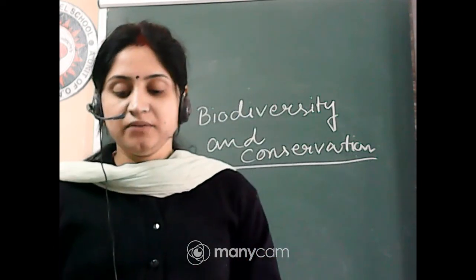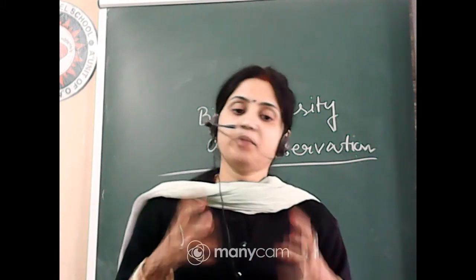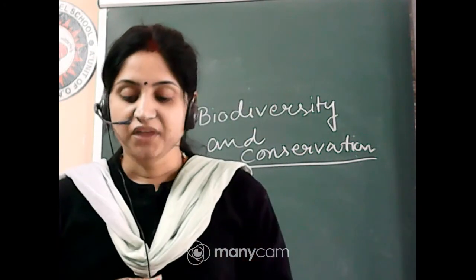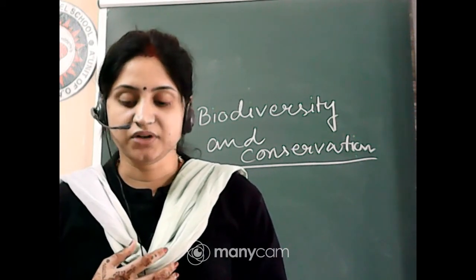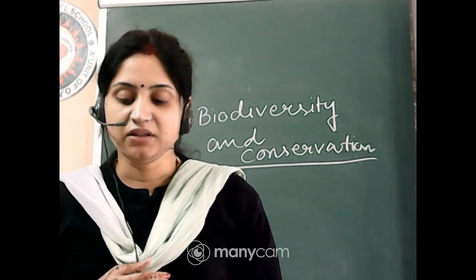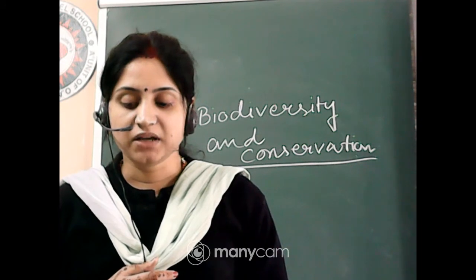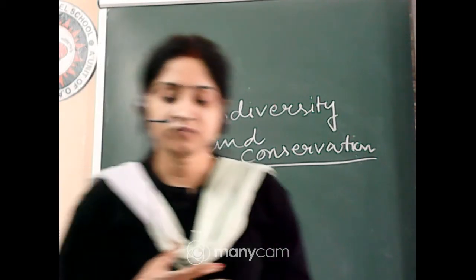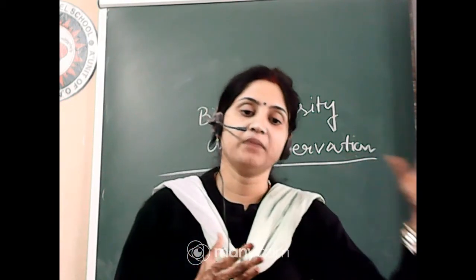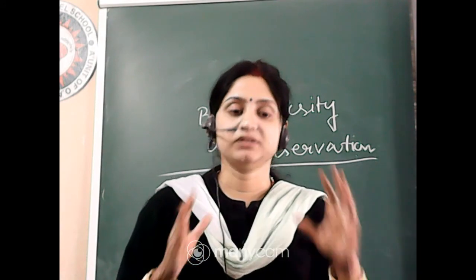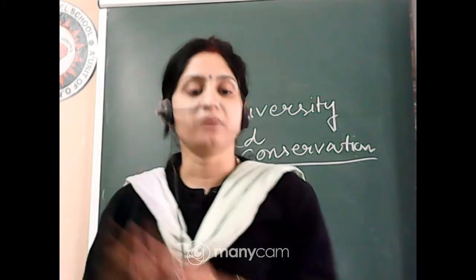Genetic diversity is most important. How does genetic diversity occur? A single species that mixes with another species forms a new generation with a new species, causing genetical variation as new genes come from other animals. A single species might show diversity at the genetic level over its distributional range. The genetic variation shown by the medicinal plant Rauwolfia vomitoria growing in different Himalayan ranges might be in terms of the potency and concentration of active chemicals that the plant produces. India has 50,000 genetically different strains of rice and 1 lakh varieties of mango.